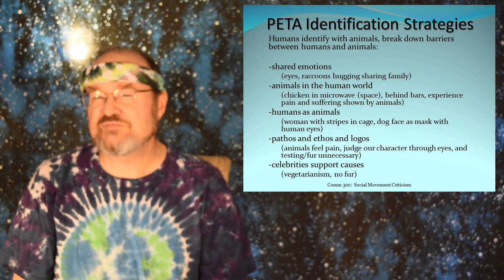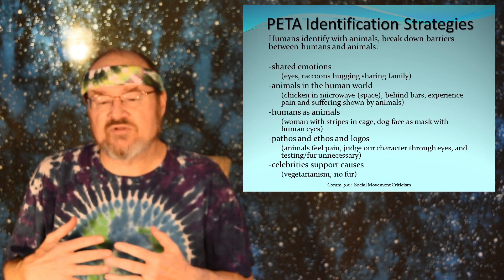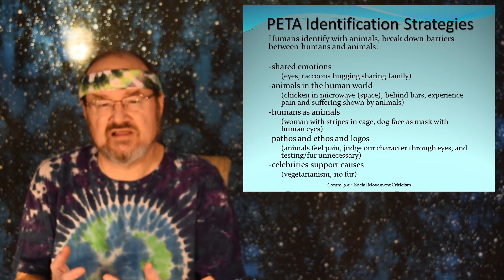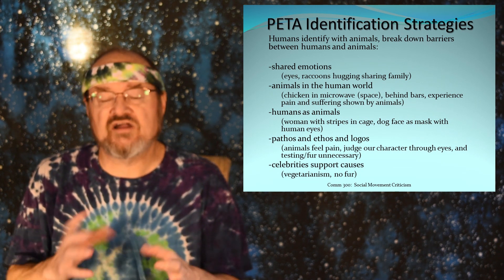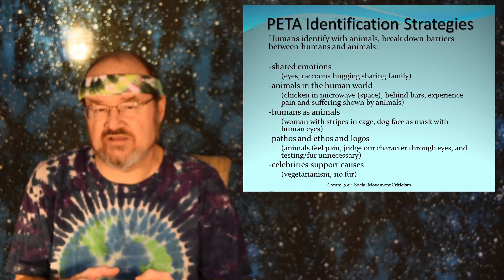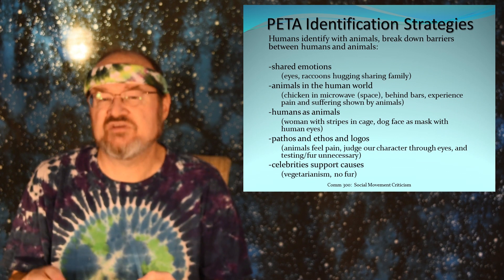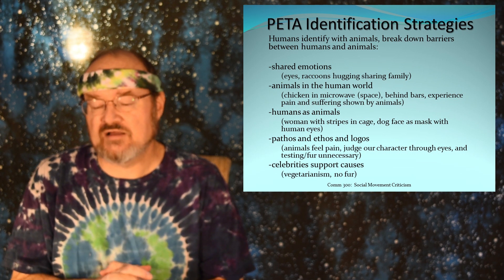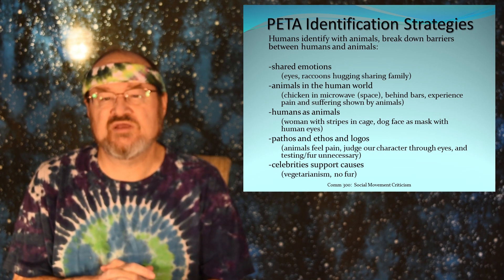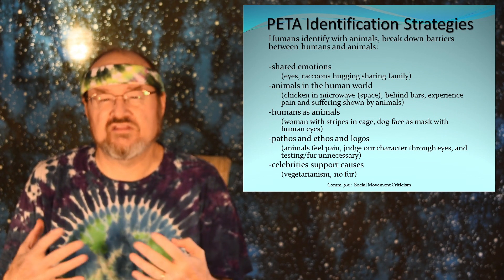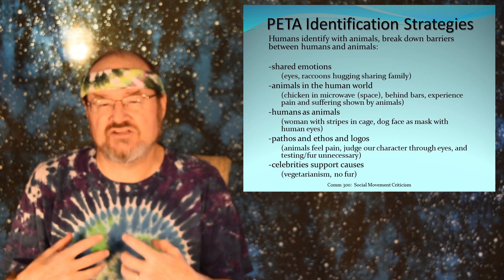Essentially, people are identifying either with an animal or with a celebrity, or they're identifying against someone who is being exploitative — someone bashing baby seals, for example. We would identify against that person, or in some of the early campaigns like throwing blood on people wearing fur, we identify against the rich person wearing animal skins on their back.